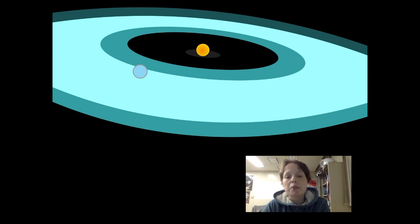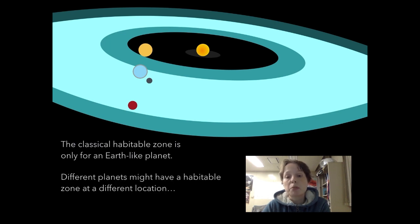The edges of the classical habitable zone are only calculated for the Earth. This is easily demonstrated, as while Venus sits outside the habitable zone, both the Moon and Mars orbit within it, but neither are Earth-like enough to support liquid water in this region. Different planets might have different habitable zones at different locations, or they may not have a habitable zone at all.